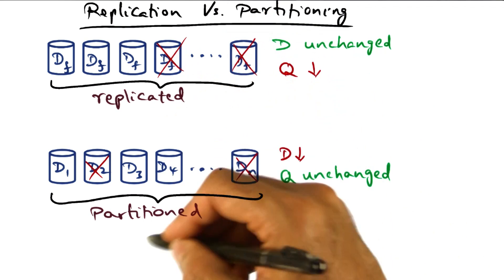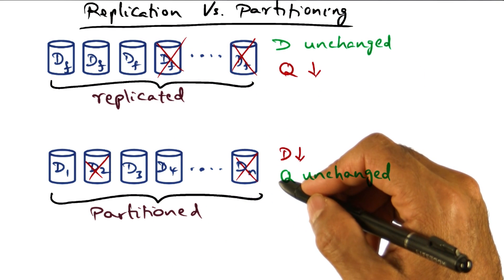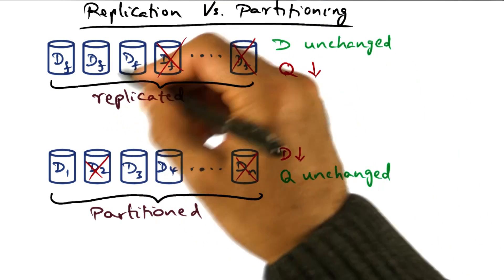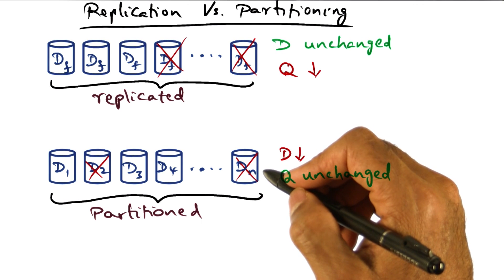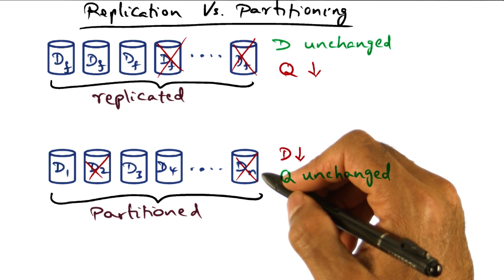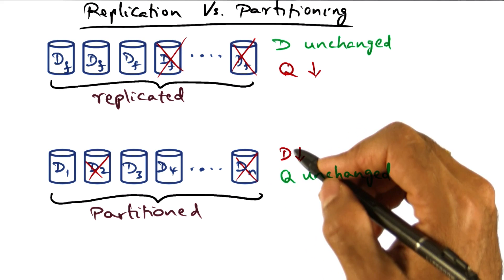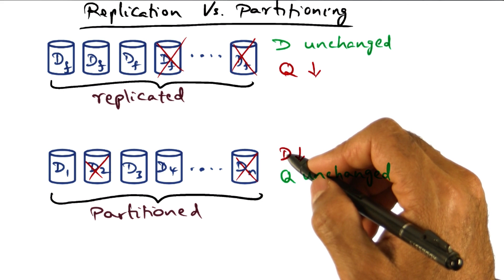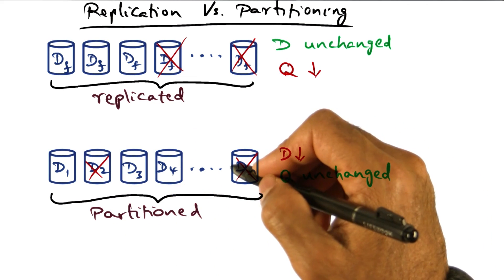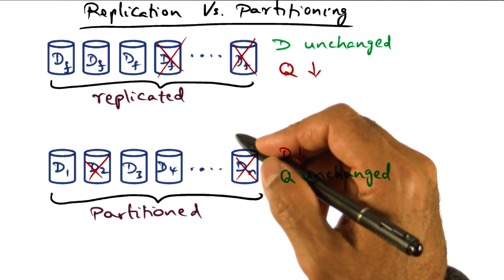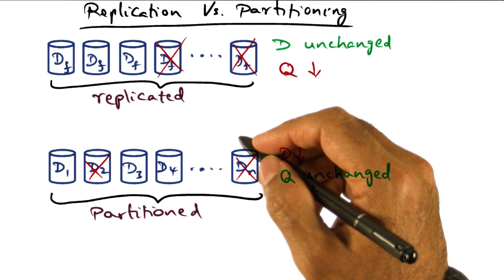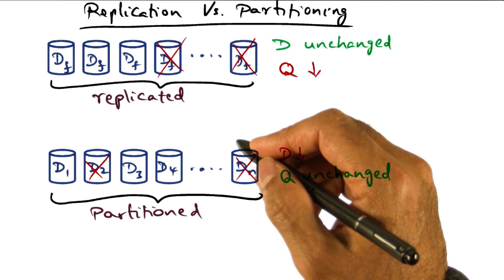The important message I want to convey through these pictures is that DQ is independent of whether we are replicating or partitioning the data. Given a certain server capacity, the DQ is a constant because we are assuming that disk is cheap, disk space is cheap, and therefore processing incoming requests are not disk bound, but network bound.